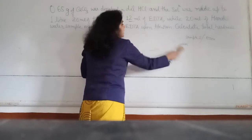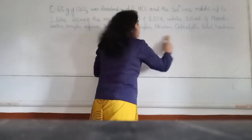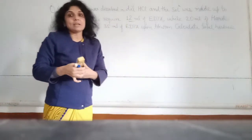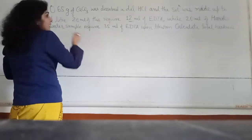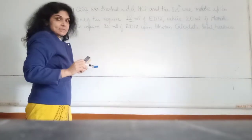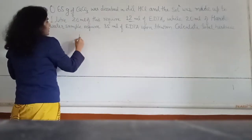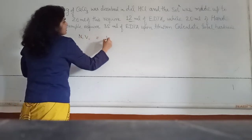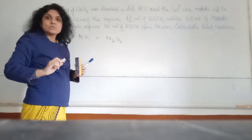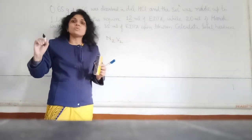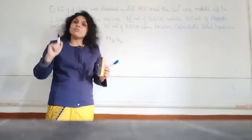Three things have been given: Sample 1, Sample 2, and EDTA. Two things are unknown — the EDTA normality and the hardness of the unknown sample. We start with the well-known equation N1V1 = N2V2. In the first step, we titrate the known sample against EDTA. Once we get the normality of EDTA, which is unknown, it will become known.